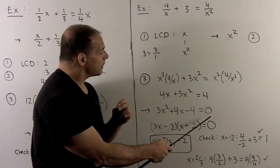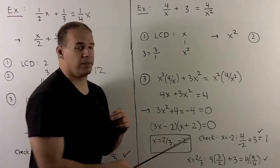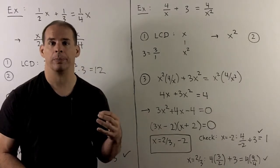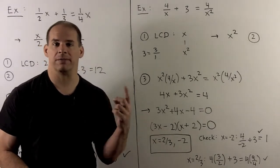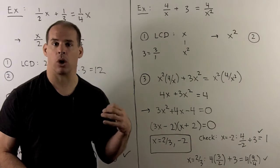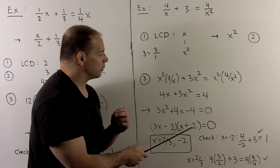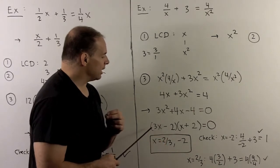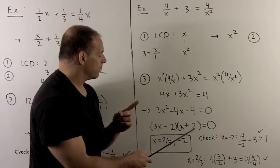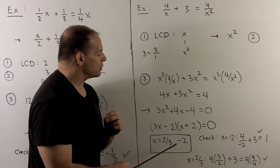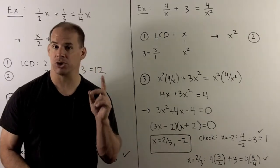I push everything to one side to get zero on the other. We have a quadratic, so we can use factoring to solve this with the zero product rule. You use your favorite method to factor, say AC method or trial and error. What comes out is 3x minus 2 times x plus 2 equal to zero. I set each term equal to zero and solve. So I'll have x equal to 2 thirds and minus 2 as potential solutions.